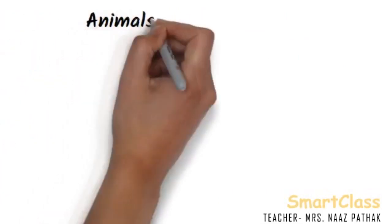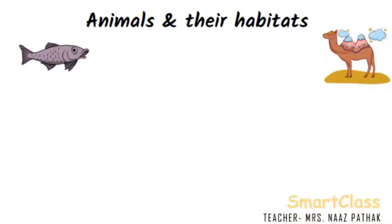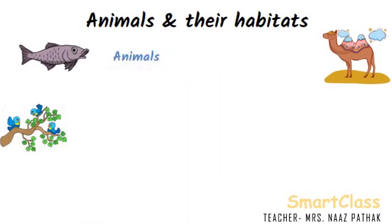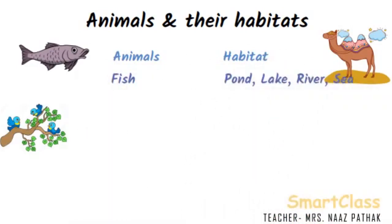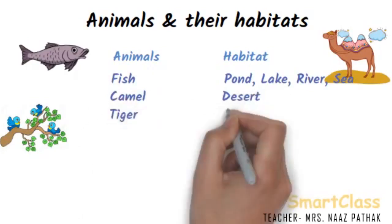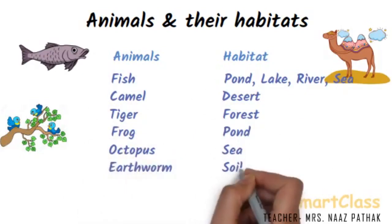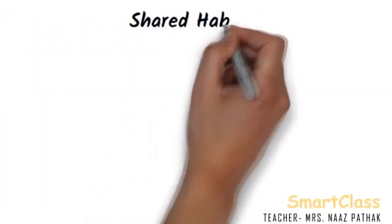Now, let us study about some animals and their habitats. Fishes live in water and cannot live without water, so the habitat of fish can be a pond, lake, river or a sea. Camel is an animal adapted to survive on very little water for a longer period of time, so habitat of a camel is a desert. Birds' habitat might be a tree. Common examples: fishes live in pond, lake, river and sea; camel is found in desert; tiger is found in forest; frog lives in pond; octopus is seen in sea; earthworm lives in soil; squirrel is found on trees; and rats are seen in fields and homes.